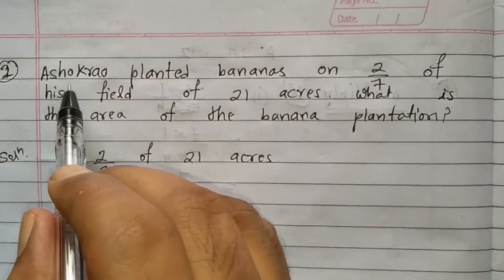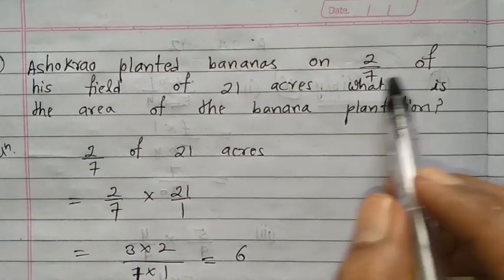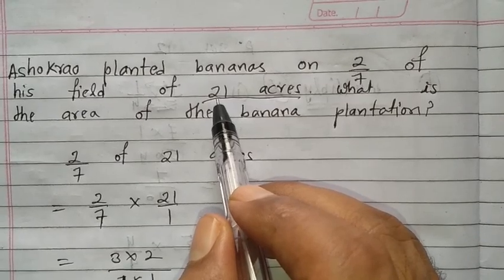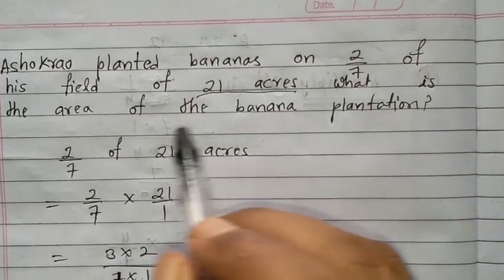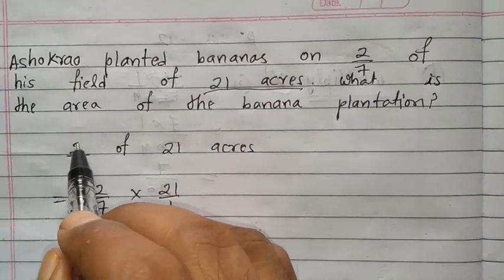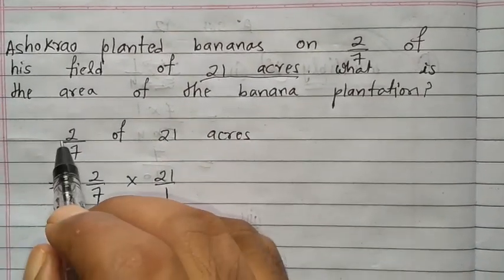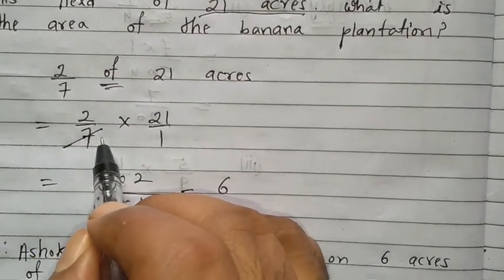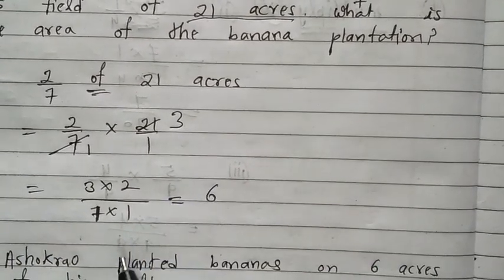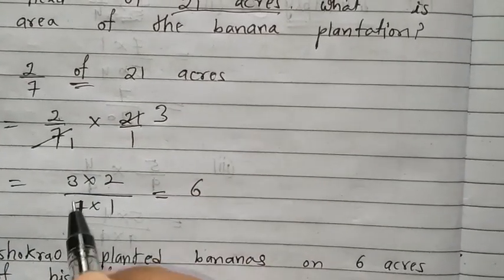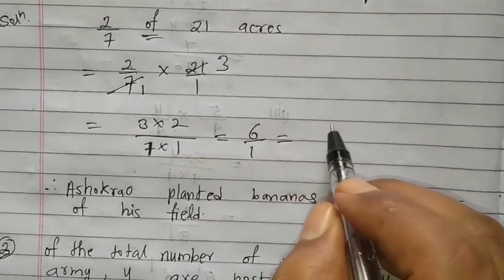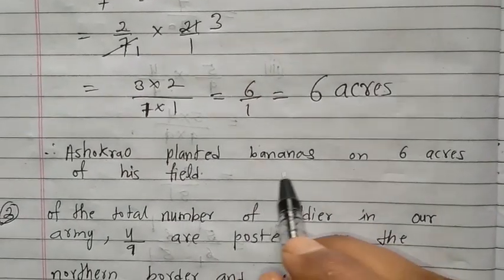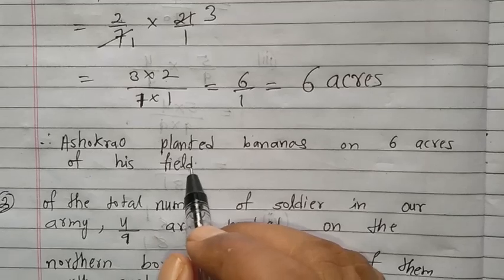Second question: Ashok planted bananas on 2 upon 7th of his field of 21 acres. What is the area of the banana plantation? What is given: 2 upon 7 of 21 acres. 'Of' means multiply. So write 2 upon 7 into 21 upon 1. Cancel: 7 into 3 is 21. Multiply: 2 into 3 is 6, 1 into 1 is 1. Answer: 6 upon 1 means 6 acres. Ashok planted bananas on 6 acres of his field.